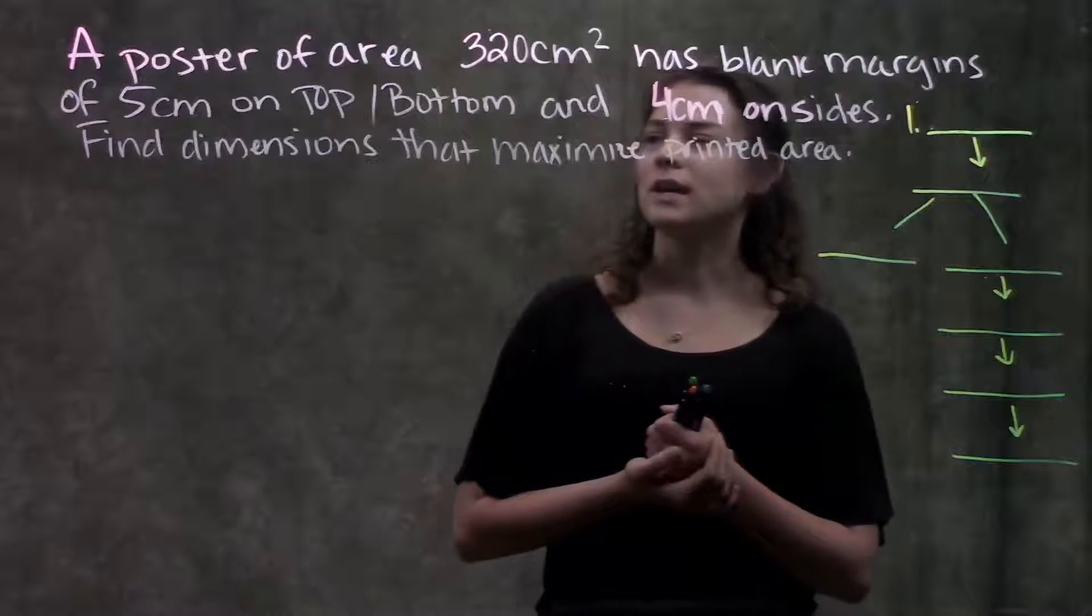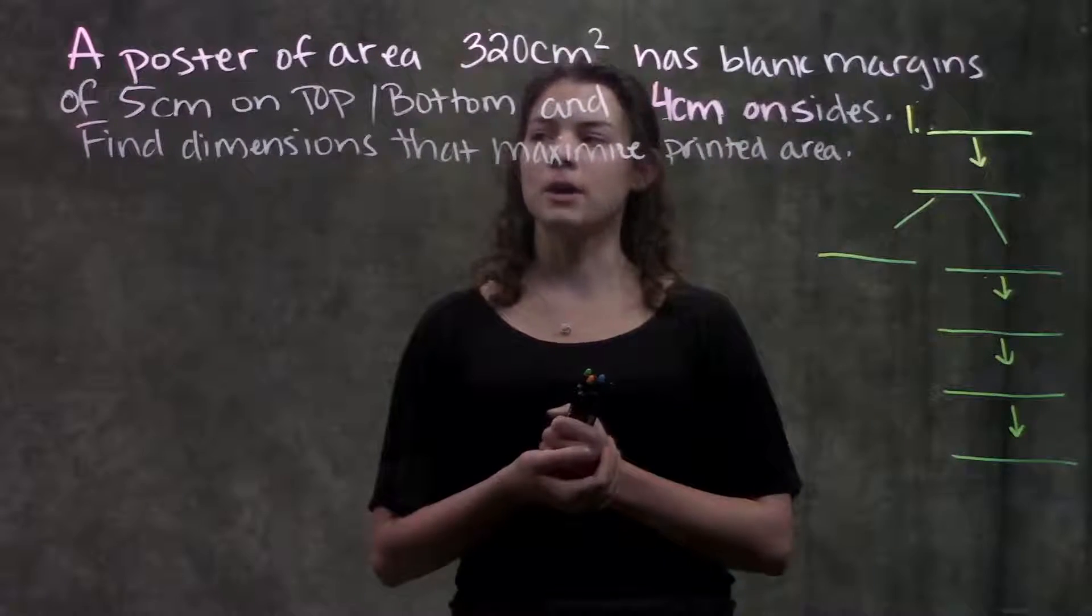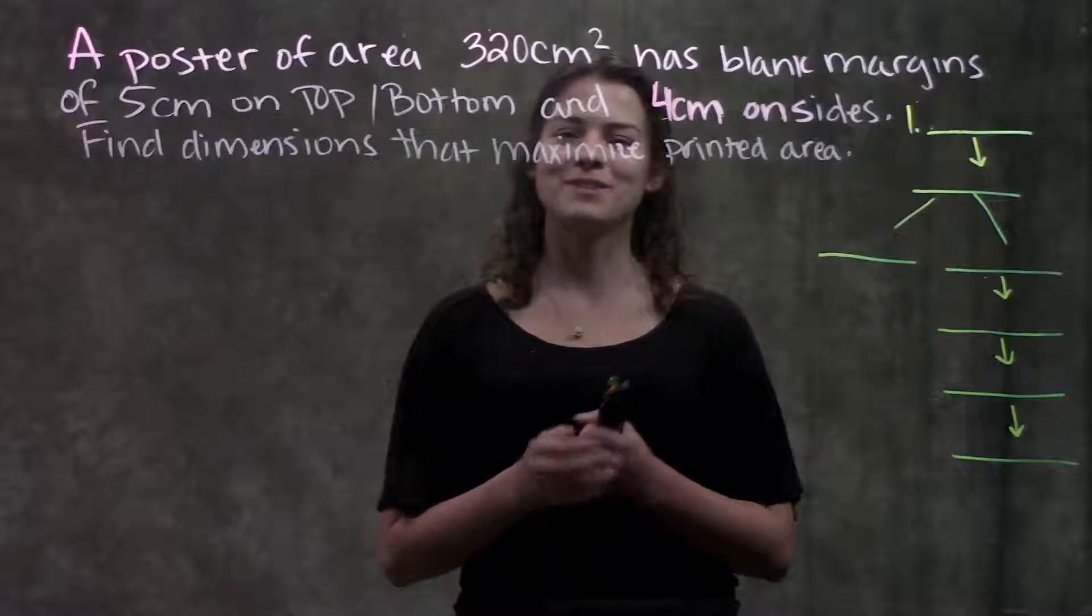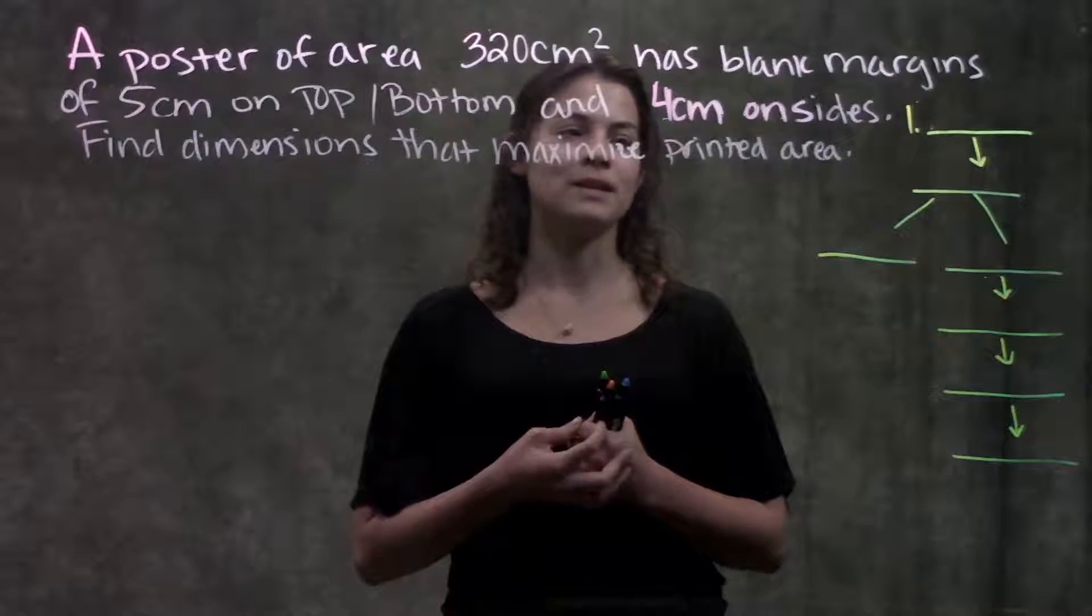The question tells us that a poster of area 320 cm² has blank margins of 5 cm on the top and bottom, and 4 cm on both sides. And it's asking us to find the dimensions that maximize the printed area.